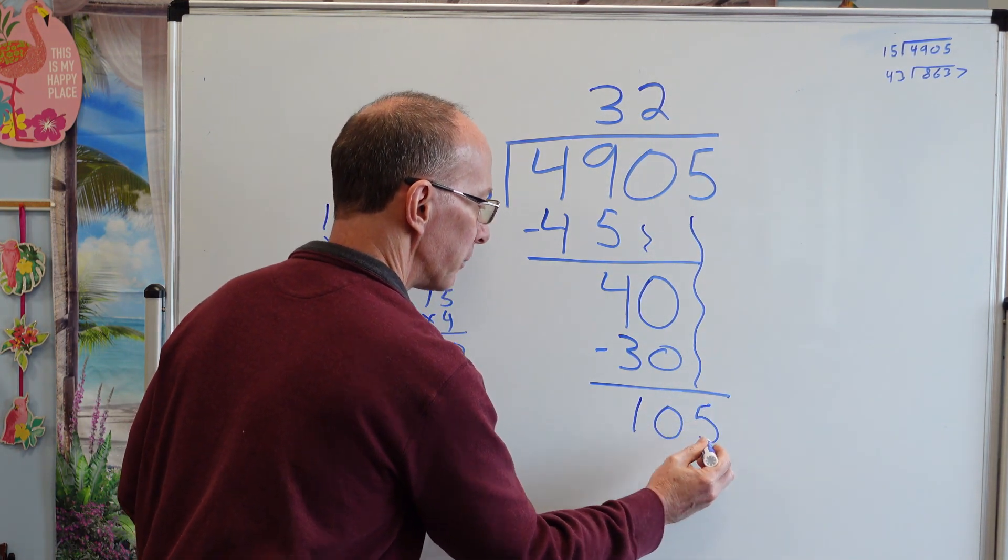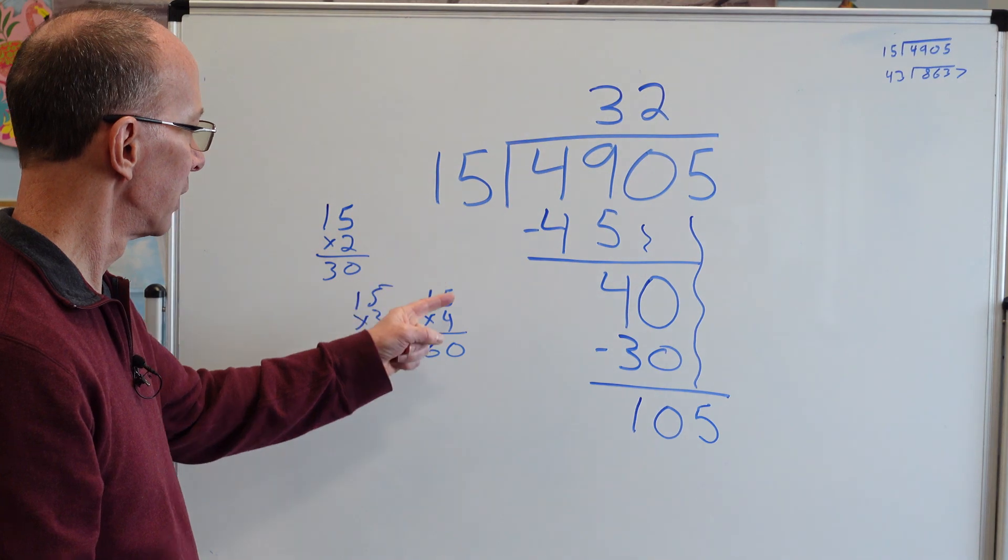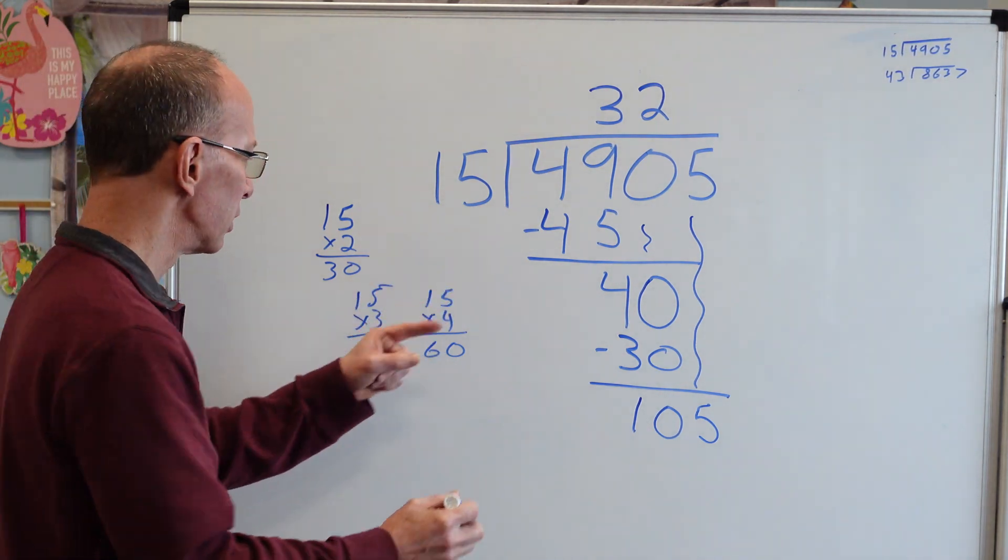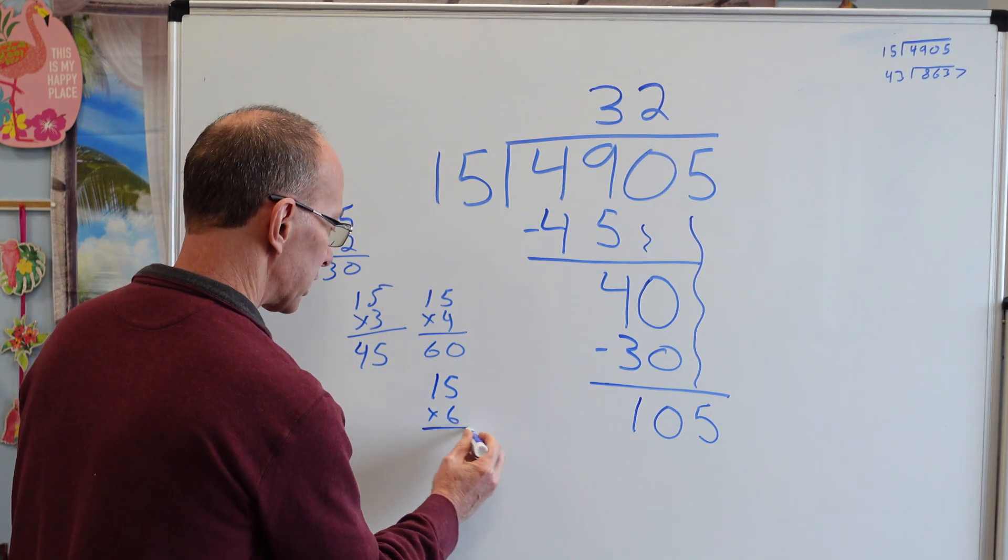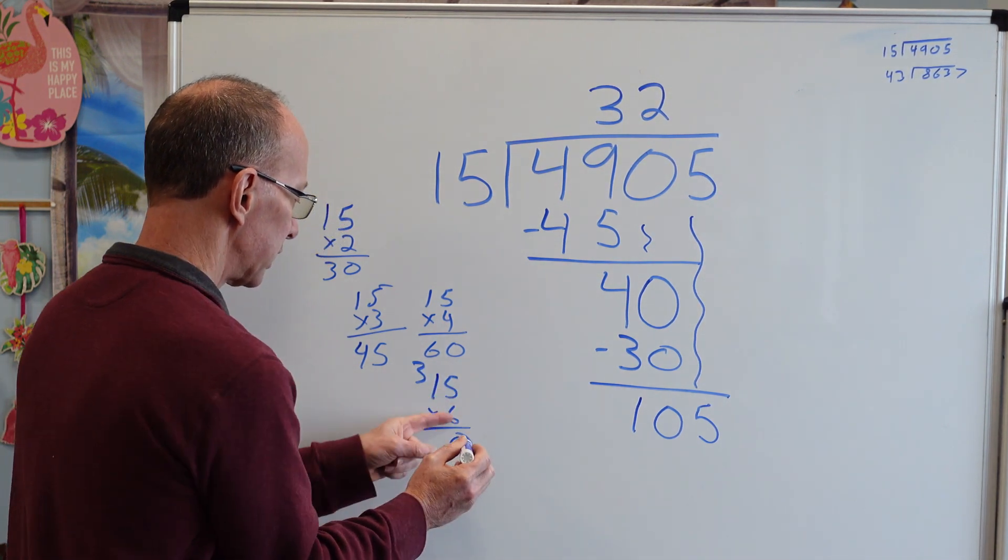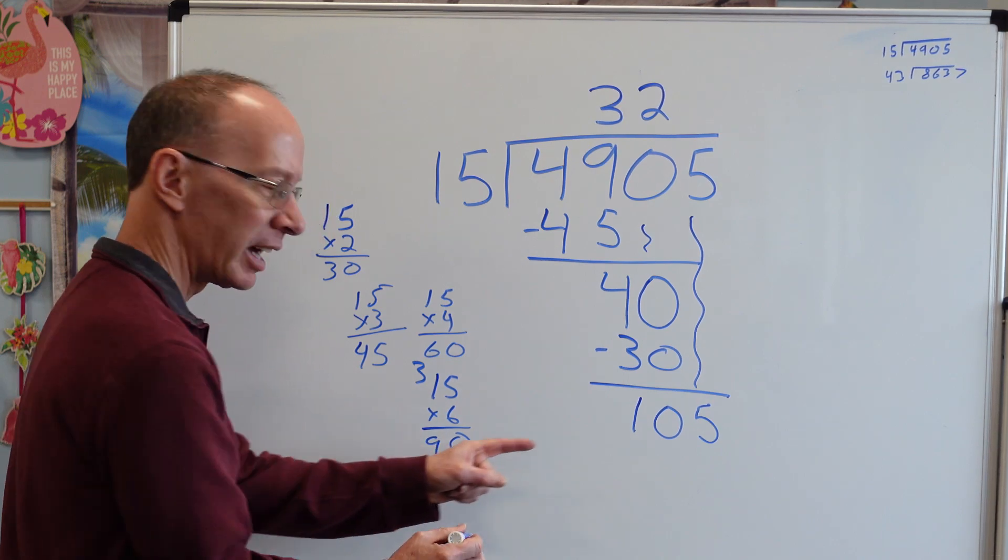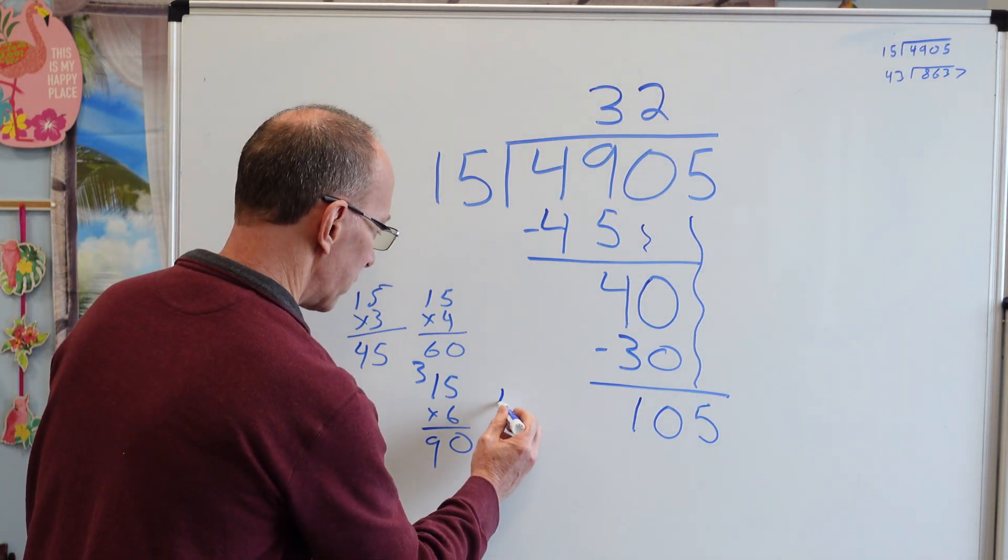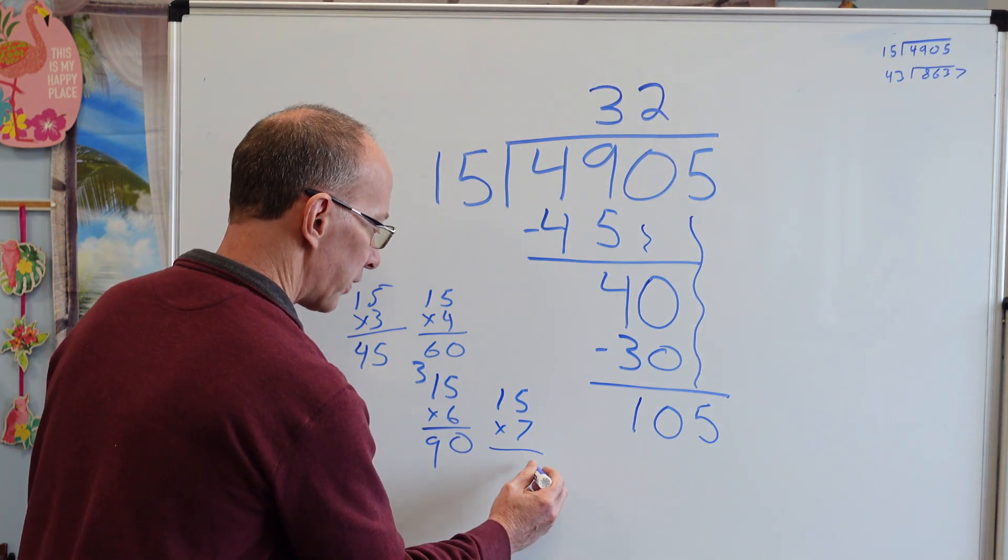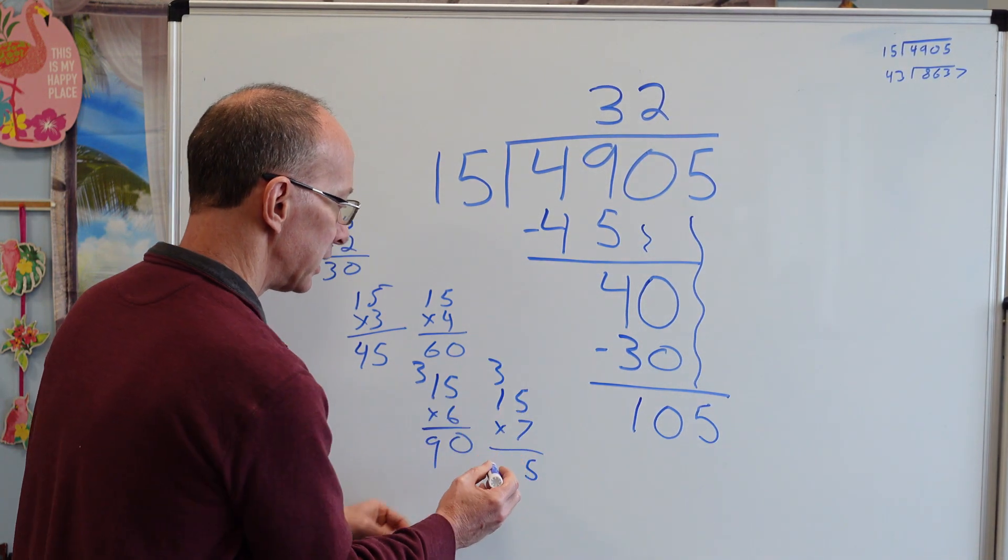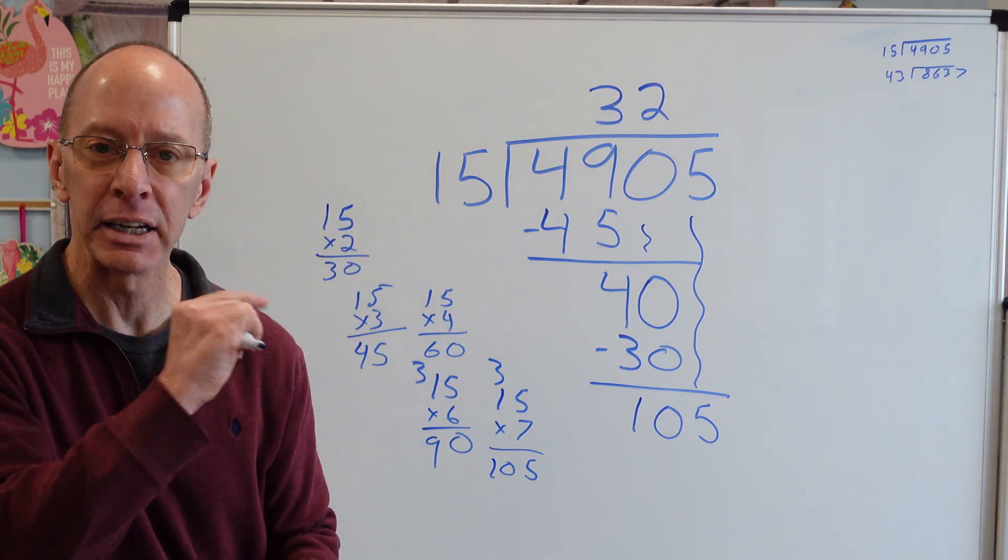Put the 5 right there. Whoa. That's a big number. I'm going to have to do a little more calculations over here. 15. I'm going to try 6. 5 times 6 would be 30. Let's see if I can go a little bigger. 15 and 7. 7 times 5, 35. 7, 8, 9, 10. Bingo. We did it.